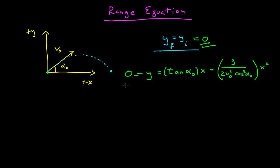If this now is equal to zero, the first thing we can do is divide by one factor of x. Bring this term on the other side to make it positive. And so we'll have g over 2, initial launch speed squared, cosine squared of launch angle, x is equal to tangent of the launch angle.